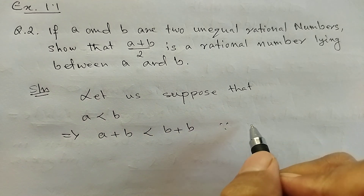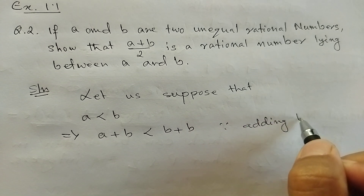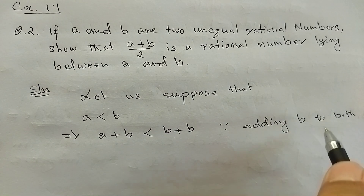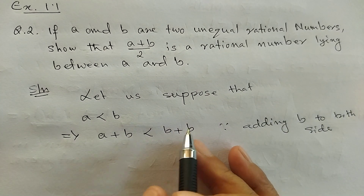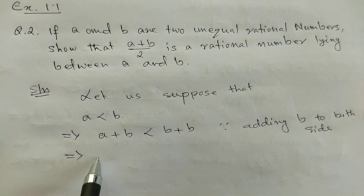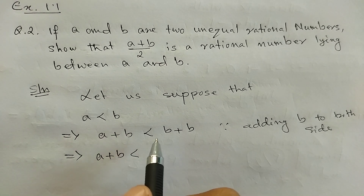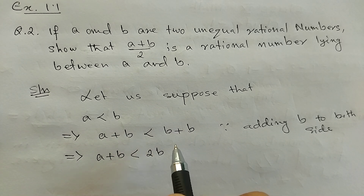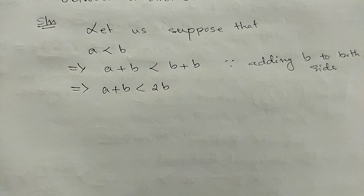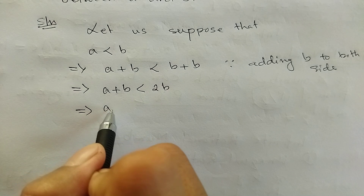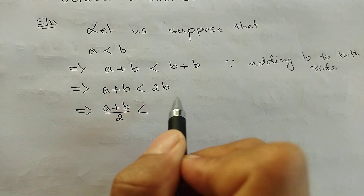Adding b to both sides: twice b, and a plus b divided by 2.